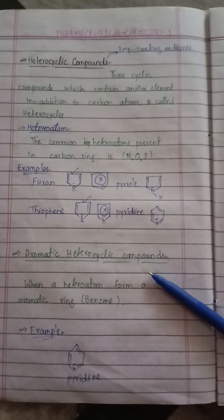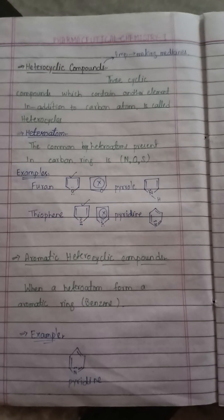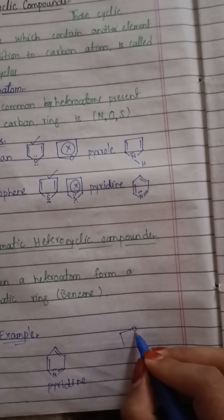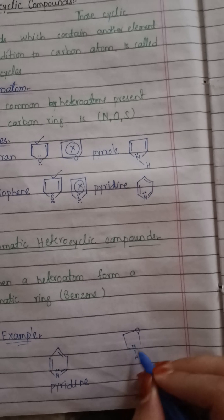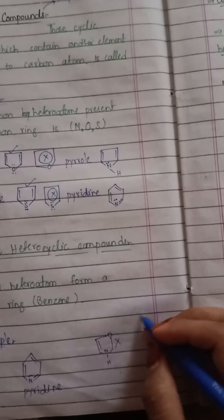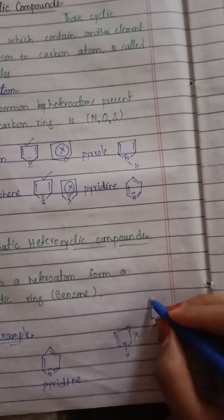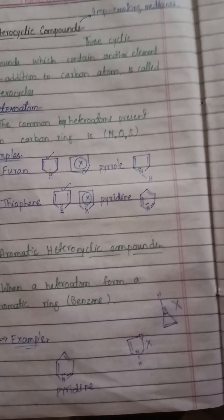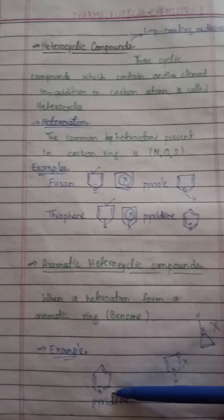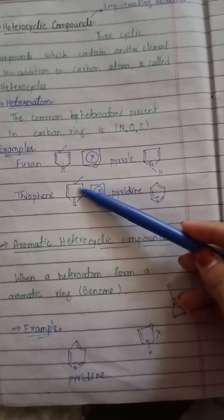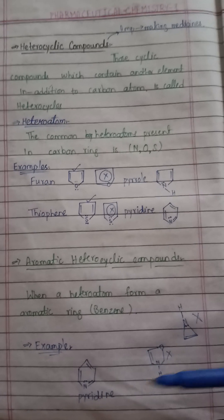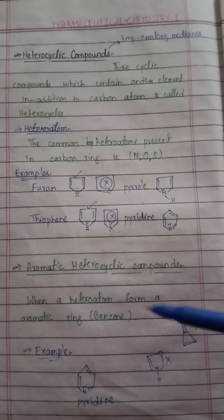Many heterocyclic compounds may be aromatic or may not be aromatic. For example, pyridine is an aromatic compound, while some other heterocyclic structures are not aromatic — they are heterocyclic but not aromatic. Pyridine, pyrrole, and thiophene are examples of aromatic heterocyclic compounds.